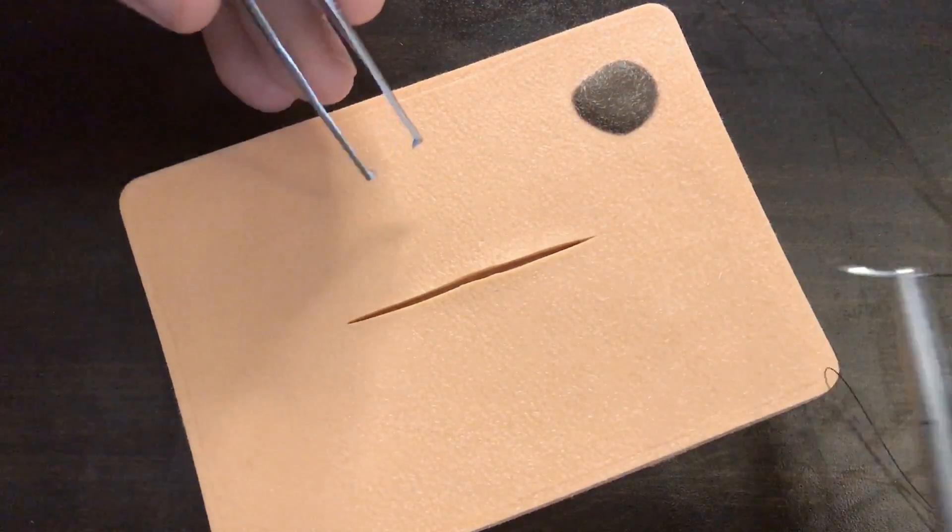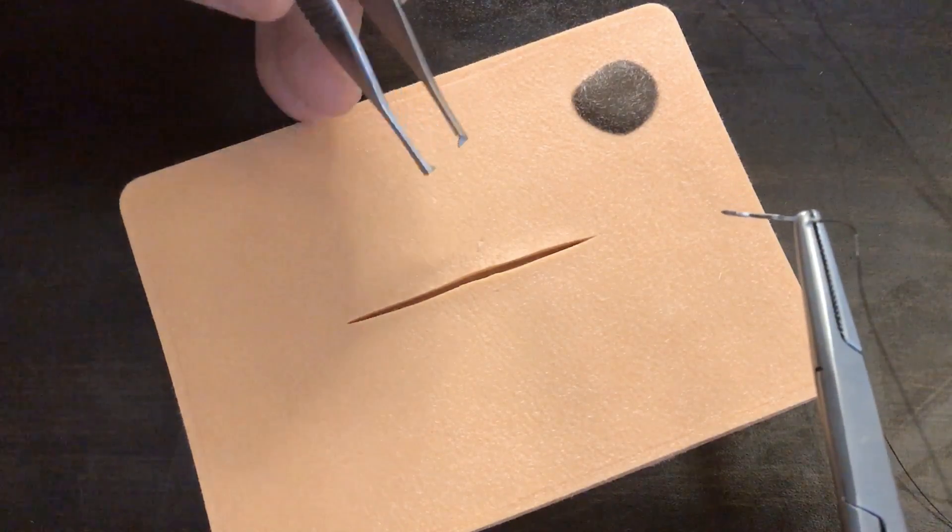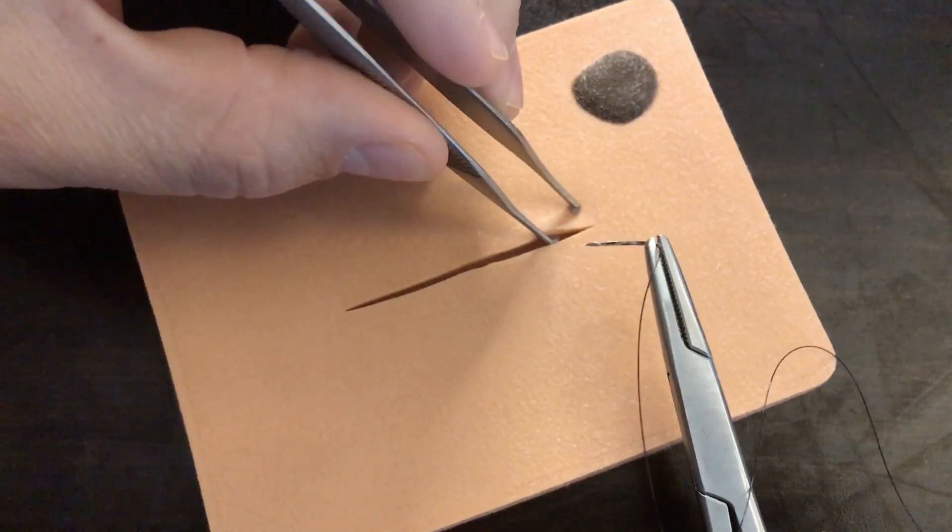In this video I'm going to demonstrate how you do a subcuticular running suture and finish it with what's called an Aberdeen knot. Alright, so let me go ahead and start.